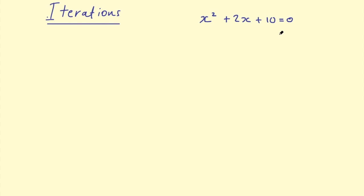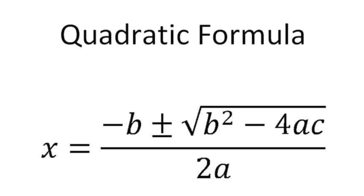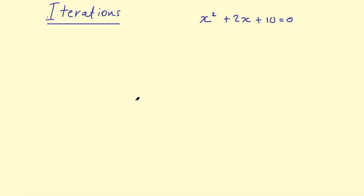We can factorise those, we can use completing the square, and we also have a formula - a pretty easy formula to solve quadratics. So we're good at quadratic equations, but when it comes to cubic equations, where there's an x cubed, a squared term, an x, and something else - it might look like this.